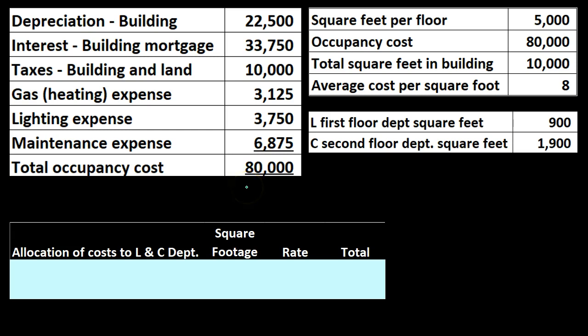Once we decide to allocate the $80,000, we need to determine how. We could divide it by the number of departments, but that's not fair since some departments are larger than others. Our goal is always something simple but fair. The square footage per floor is 5,000, total square footage is 10,000, and occupancy costs are $80,000. Using square footage as an allocation base, we divide $80,000 by 10,000 total square feet to get an average cost of $8 per square foot.